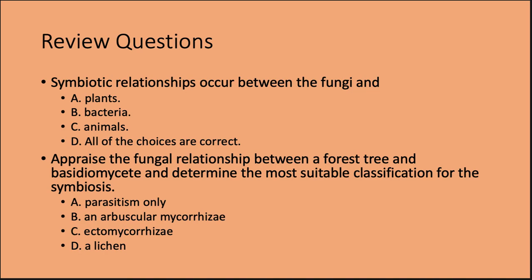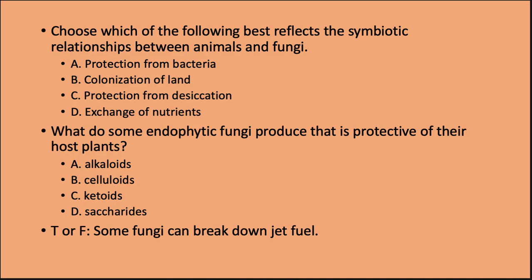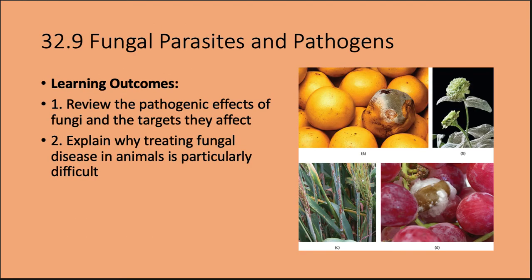Review questions: Symbiotic relationships between fungi and plants — D, all choices are correct. The fungal relationship between a forest tree and a basidiomycete is best classified as C — ectomycorrhizae. The best reflection of symbiotic relationships between animals and fungi is D — exchange of nutrients. What endophytic fungi produce to protect host plants — A — alkaloids. True or false: some fungi can break down jet fuel — true.